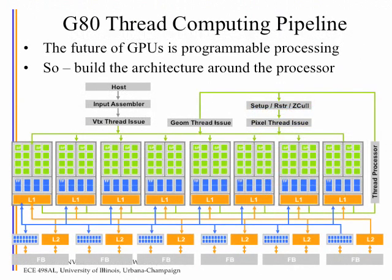Let's talk about how threads get created, assigned, and scheduled on this machine. When the DirectX or OpenGL API functions execute, they make requests to the chip for vertex drawing, triangle drawing, texture shading, and so on. Each task has a list of vertices, triangles, or pixels to process.